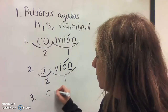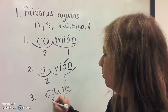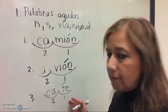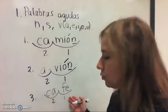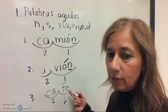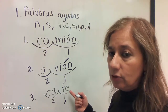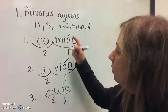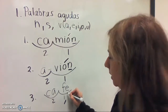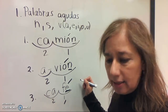Número tres: café. Where is the stress? Uno, dos — the stress is on the fe, the last syllable. So, you have to decide if you're going to write an accent. Does it end in N, S, or a vowel? Yes, it ends on a vowel. So yes, you're going to write the accent.